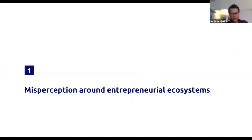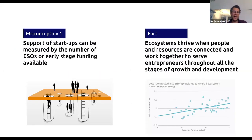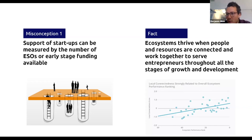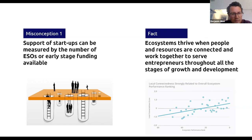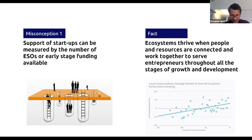I'd like to start with some of the learnings we had and some of the misperceptions around entrepreneurial ecosystem building. One of the first findings is that supporting startups can be measured by the number of ESOs — entrepreneurship support organizations — or early-stage funding. This is a very common belief, but we realized that more is not always better. If those actors really work in silos and the ecosystem is fragmented with no real working together, it's really about this working together that makes an ecosystem work efficiently.